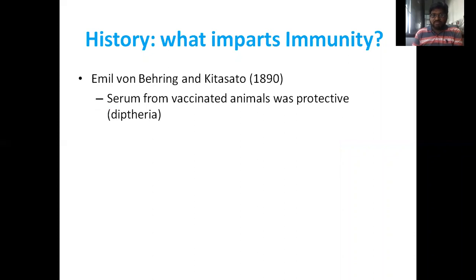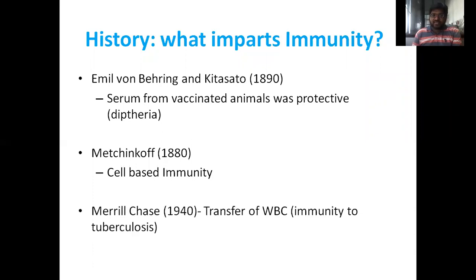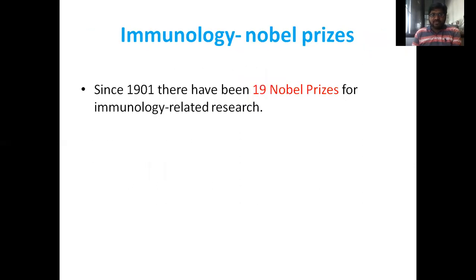History: what imparts immunity? Starting from the 1890s, Emil von Behring and Kitasato showed that serum from vaccinated animals was protective against diphtheria. Metchnikoff found cellular immunity in 1880, and Merrill Chase in 1940 demonstrated transfer of WBC immunity for tuberculosis. Since 1901, there have been 19 Nobel Prizes for immunology research.